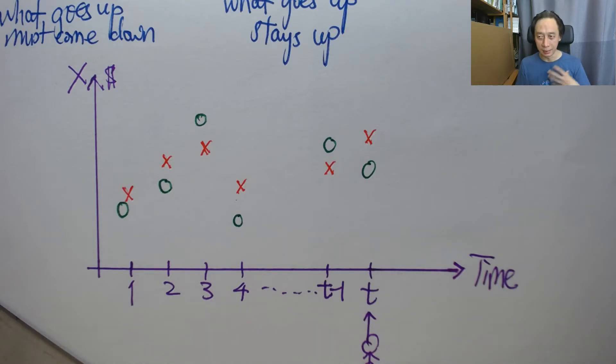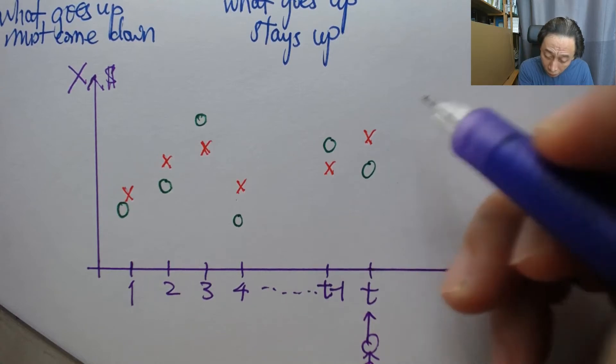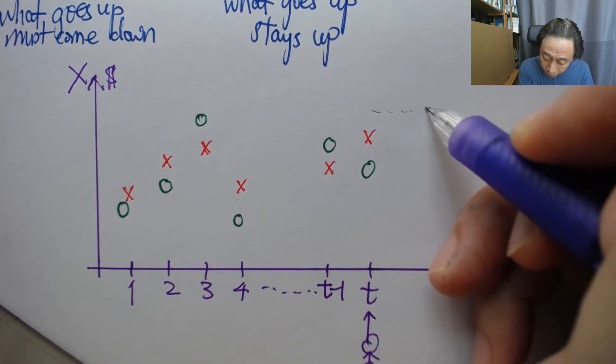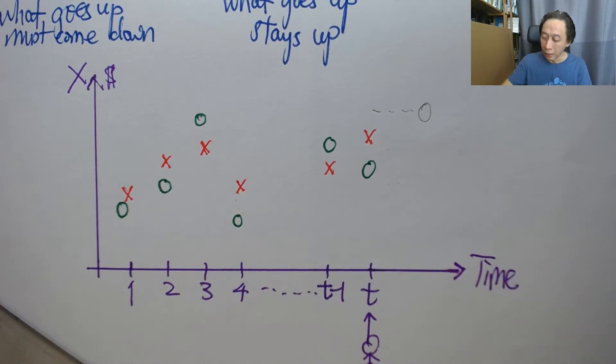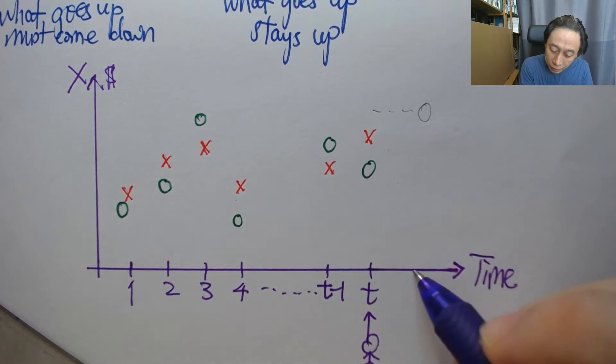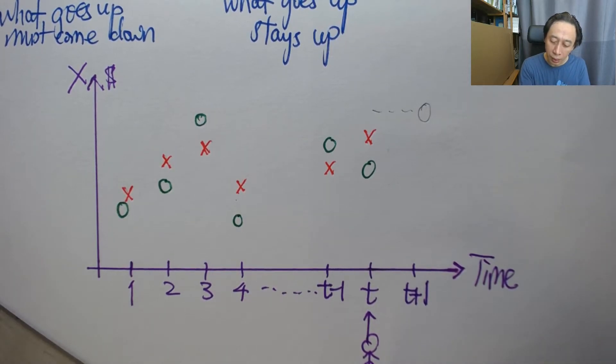So that we can come up with a new green circle before time t plus one arrives. So this is t plus one and that is our future because we are here and this is now.